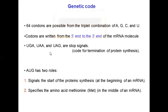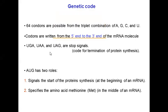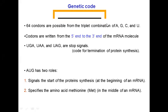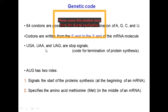The 64 codons are possible from the triplet combination of A, G, C, and U. The codons are written from the 5' end to the 3' end of the mRNA molecule. Remember to follow the direction — from the 5' end to the 3' end. These are stop signals.